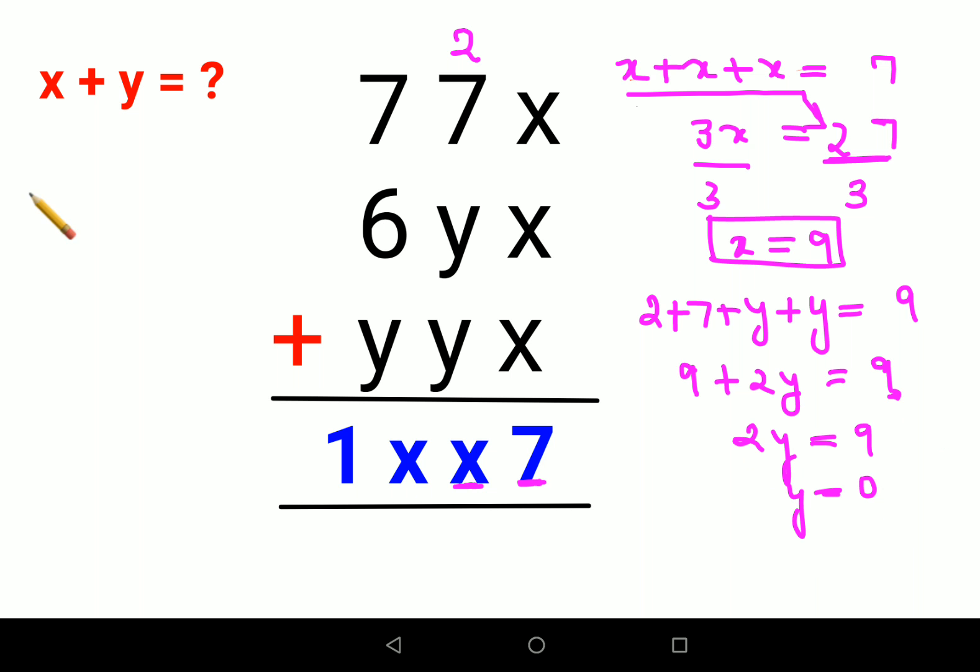If that is the scenario, look closely: 7 plus 6 plus 0 (instead of y we'll put 0) should get you the value as 1 and x, which is 19. But that is not possible because 7 plus 6 gets you 13, plus 0 also remains 13. That is not equal to 19, so this cannot be possible.